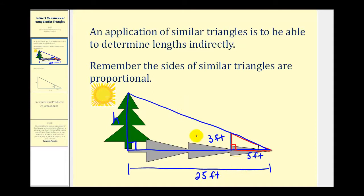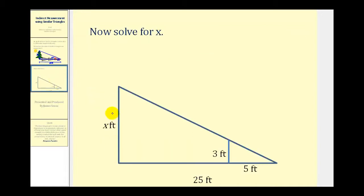Let's go ahead and take a look at a cleaner diagram of this information. Again, x would be the height of the tree. This longer side here is twenty-five feet, the length of the shadow of the tree. And here we have the yardstick and here we have the shadow of the yardstick. And again we know we have two similar triangles by angle, angle similarity.